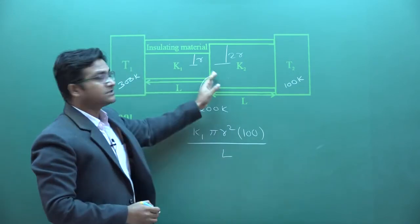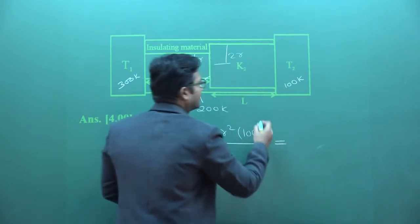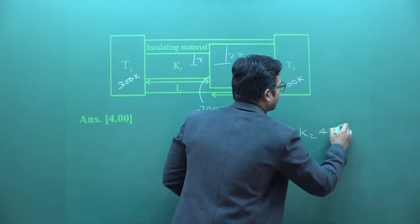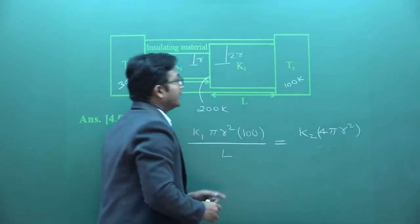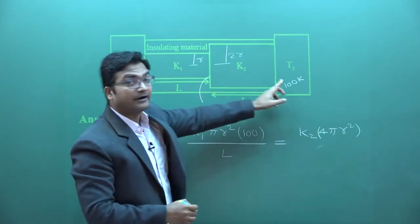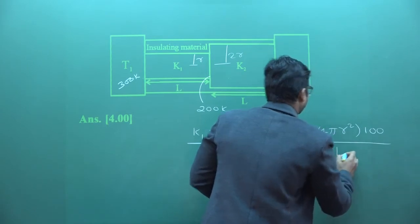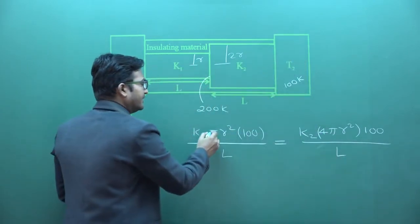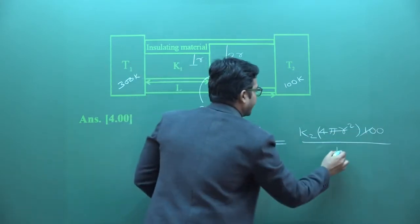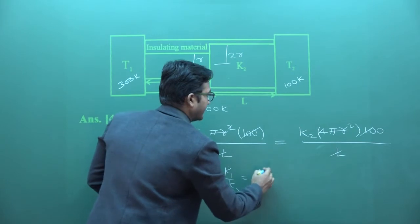Equating heat currents: K1 × πR² × 100 / L = K2 × 4πR² × 100 / L, since the second rod has radius 2R giving area 4πR². The πR², 100, and L all cancel. The result is K1 / K2 = 4.